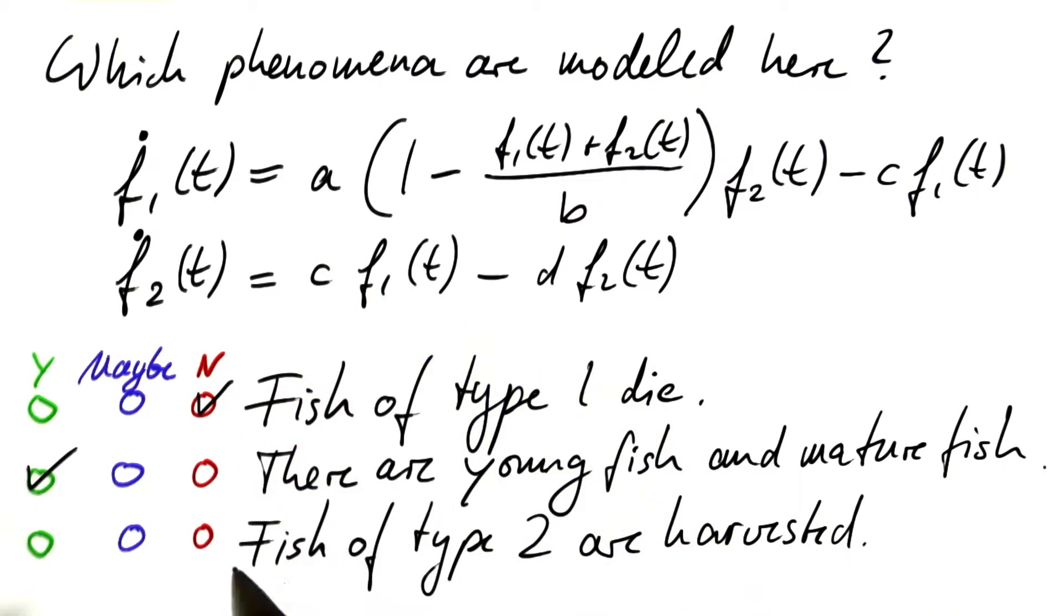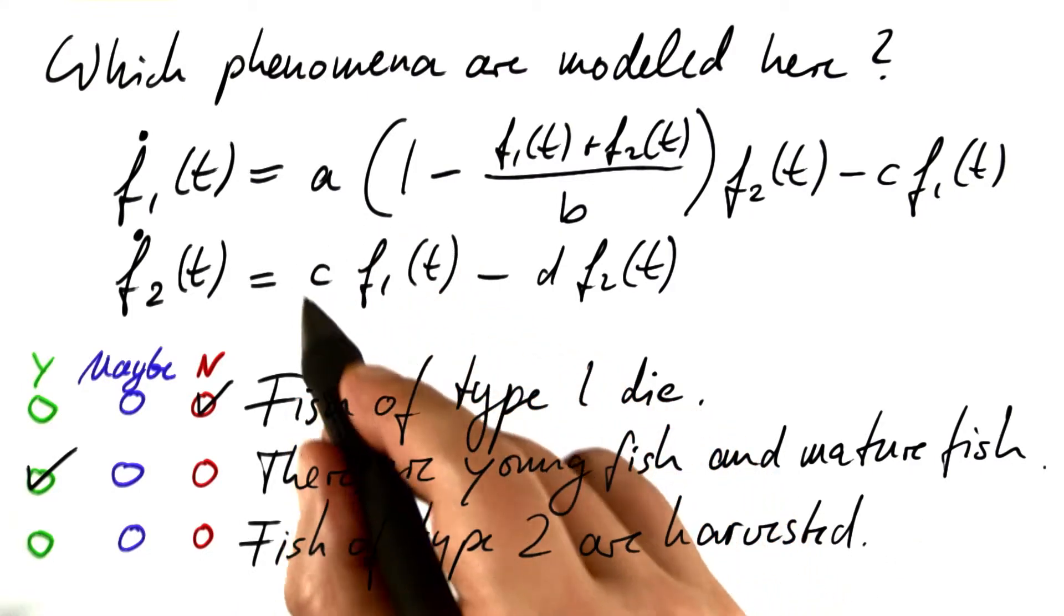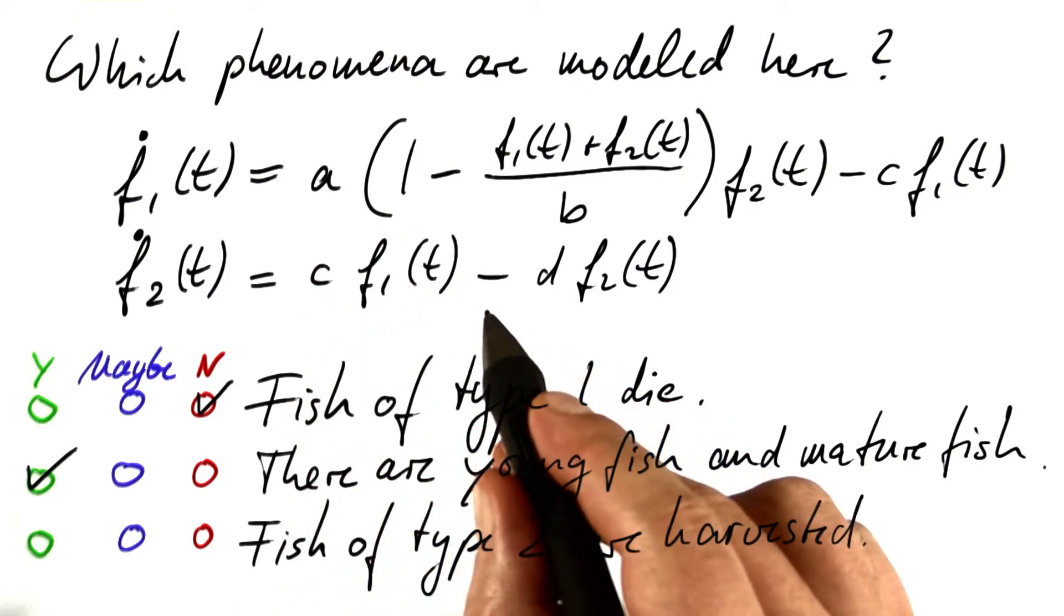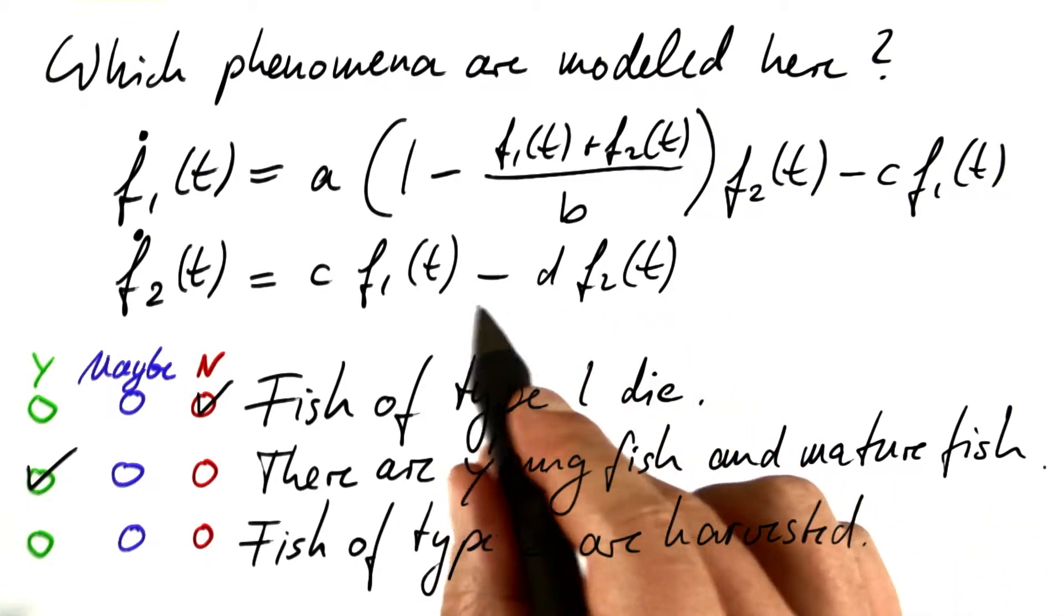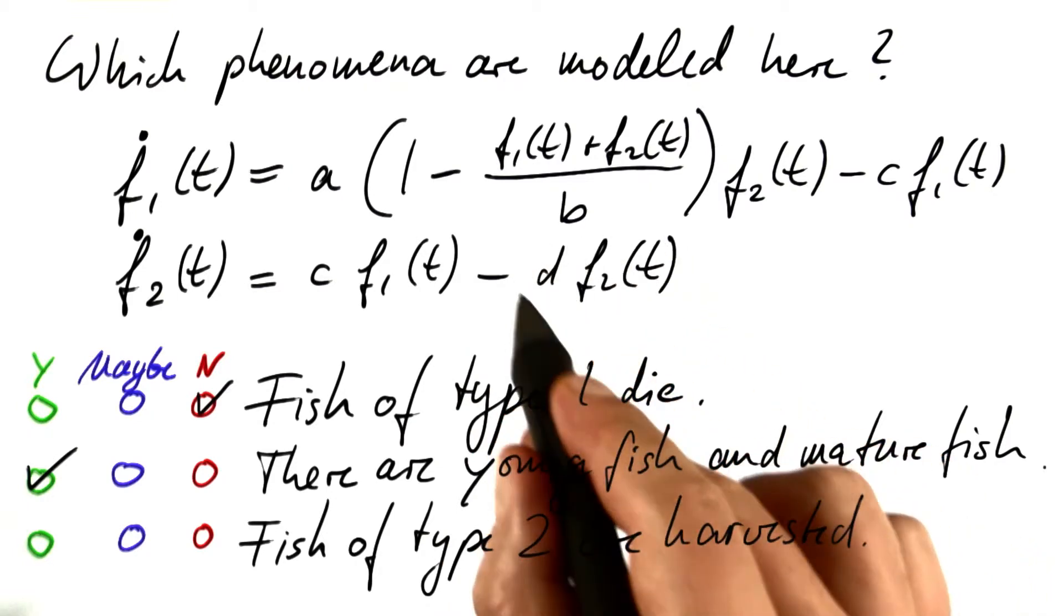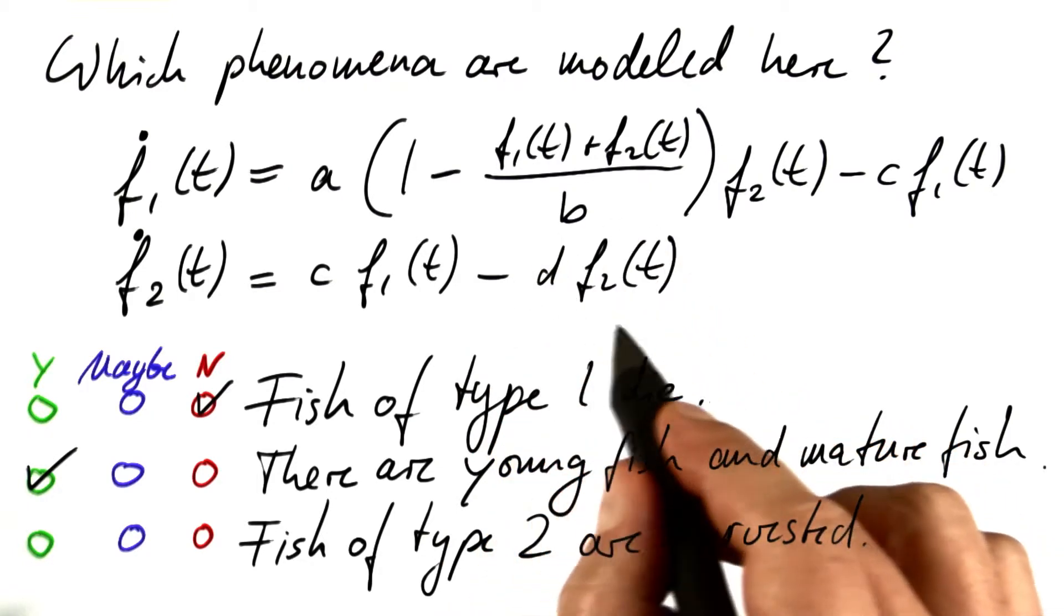What about are fish of type 2 harvested or not? We've already explained the first term. What about the second one? At least this is not constant harvesting. For constant harvesting, we should be subtracting a constant rate, so and so many tons per year.